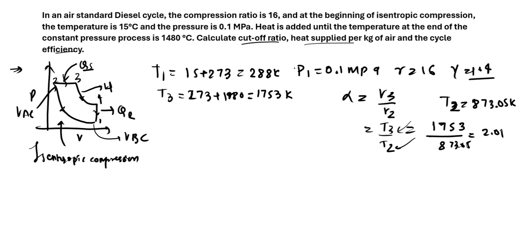And if you put this into the cycle efficiency formula, you will get the cycle efficiency. So we have cycle efficiency for diesel cycle as 1 minus 1 divided by R to the power of gamma minus 1, times alpha to the power of gamma minus 1, divided by gamma times alpha minus 1. So this is the cycle efficiency for any diesel cycle. Alpha is cutoff ratio, gamma is the isentropic coefficient, and R is the compression ratio.